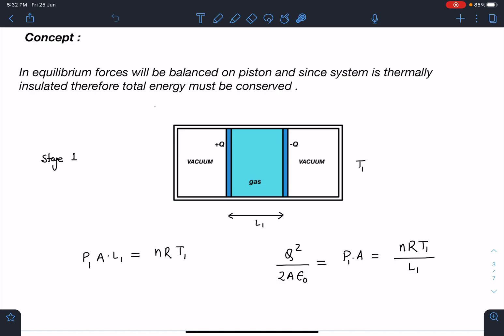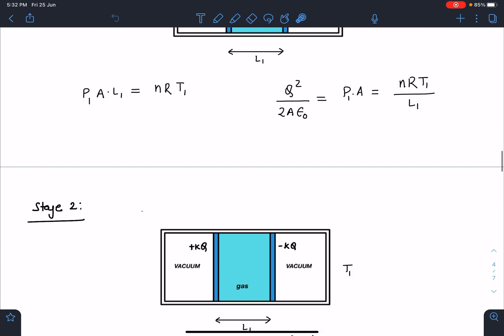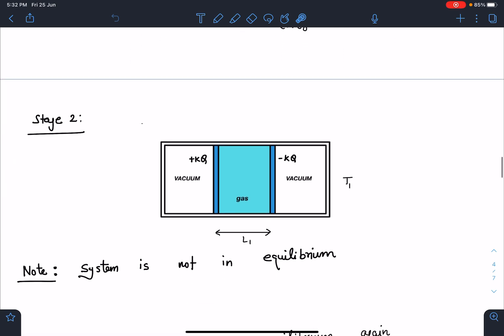The very next moment when suddenly this charge has been increased k times. So the system will be in this situation now I am calling this as Stage 2. Suddenly this charge has become KQ and this charge has become minus KQ here and still this distance is L1 and temperature of the gas did not change it is T1 only. After this what is going to happen due to the attraction this gas will compress because it is not in equilibrium at this moment.